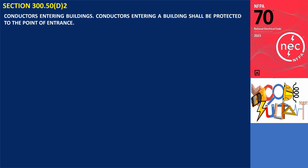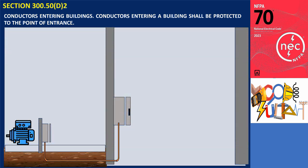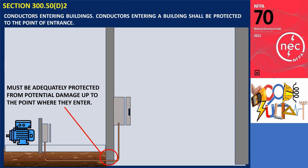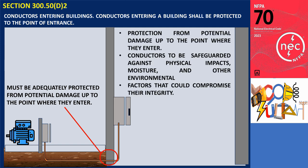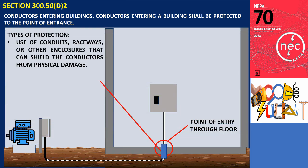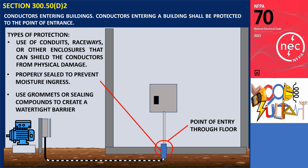Section 300.5(D.2) addresses the requirements for protecting conductors as they enter a building. The conductors entering a building must be adequately protected from potential damage up to the point where they enter. This ensures that the conductors are safeguarded against physical impacts, moisture, and other environmental factors that could compromise their integrity. The point of entrance refers to the location where the conductors transition from an outdoor environment into the building's structure — through walls, floors, or other structural elements. Common methods of protection include the use of conduits, raceways, or other enclosures that can shield the conductors from physical damage, and the entry point must be properly sealed to prevent moisture ingress.